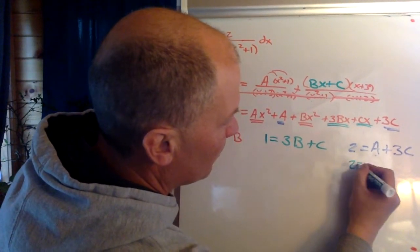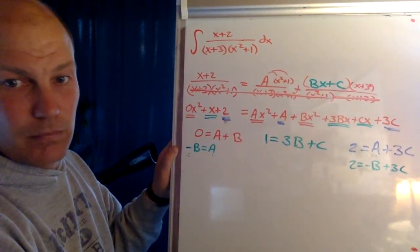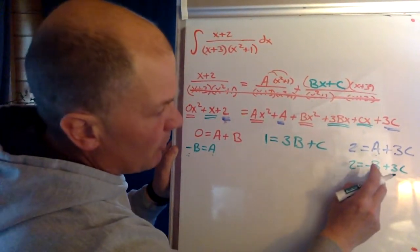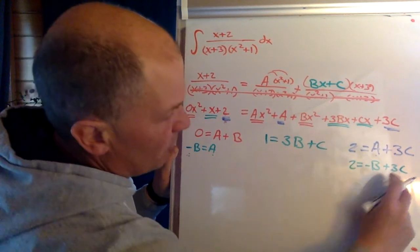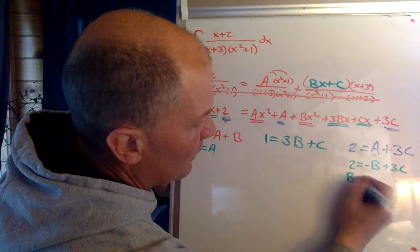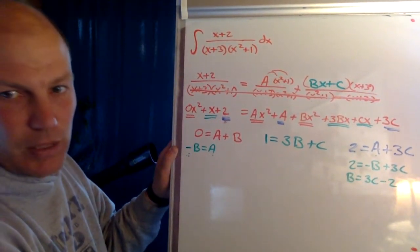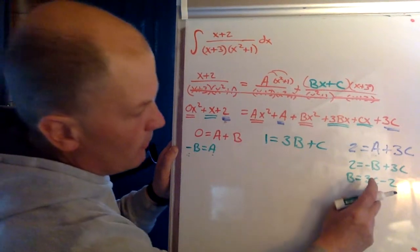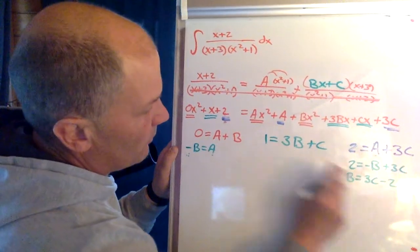So now that I know what a is, I can take that and bring it over here. So I'm going to say two is negative b plus 3c. All right, now I can probably solve for this negative b pretty easily. I'm going to bring the b over and move the two over that way. So b is going to be the same as 3c minus 2.